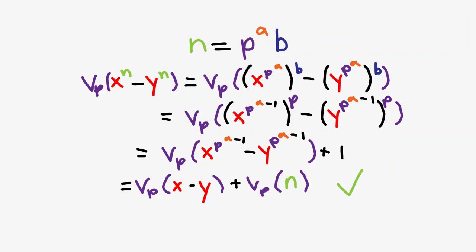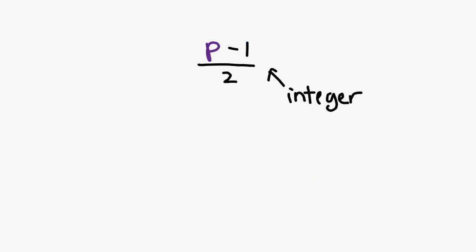Notice that earlier, we needed the condition that p is odd, so that p minus 1 over 2 could be an integer. The only prime that is not odd is 2, and LTE does actually exist for p equals 2. There are two versions, though, depending on whether or not n is odd. And these are shown here.